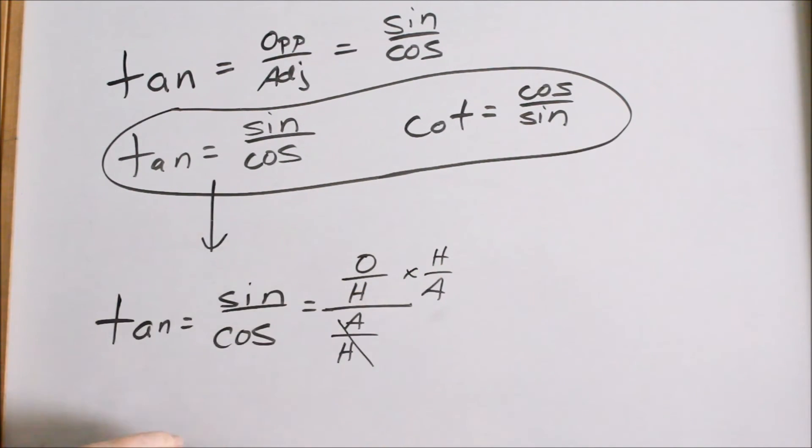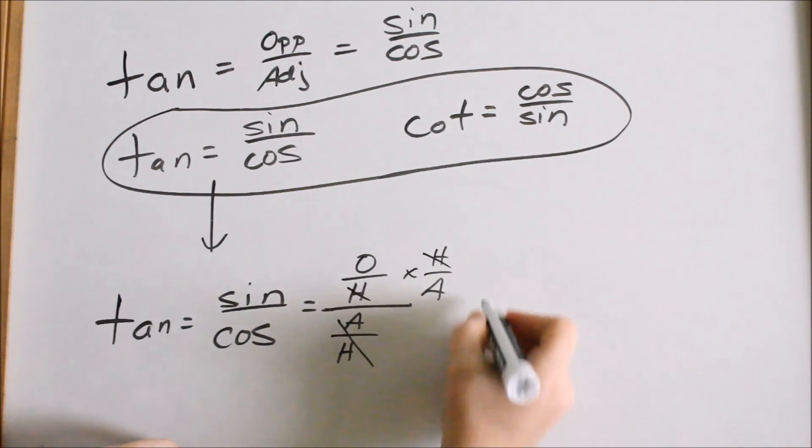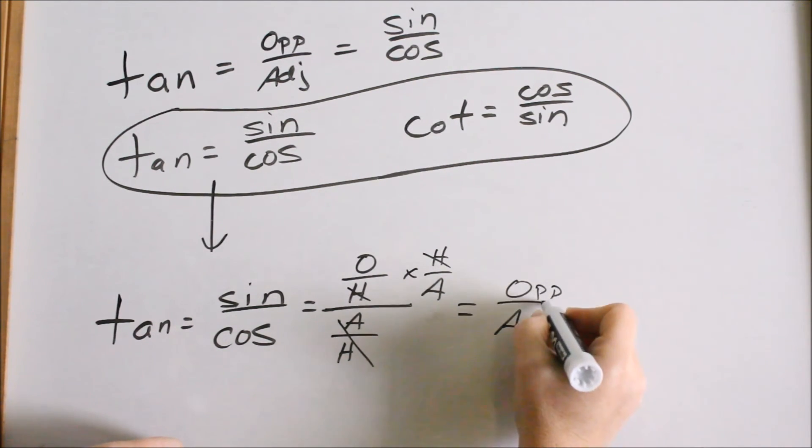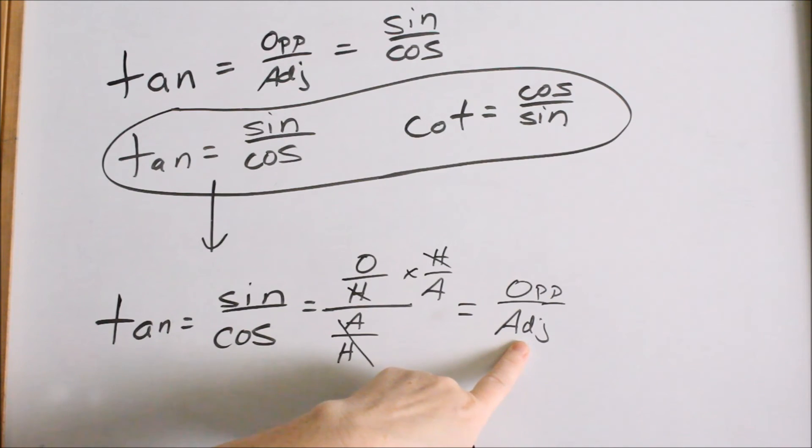So we took that and flipped and multiplied. What happens to our hypotenuse? They cancel. And so what are we left with? O over A, which is opposite over adjacent. And what is opposite over adjacent? That is tangent.